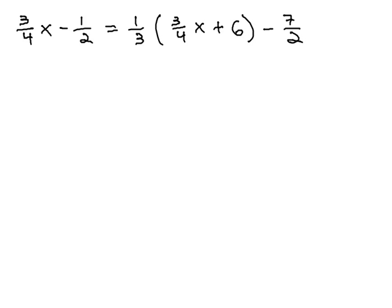Linear equations with fractions can seem like they get pretty complex pretty fast. In this problem, we have 3 fourths x minus 1 half equals 1 third times the quantity 3 fourths x plus 6 minus 7 halves.